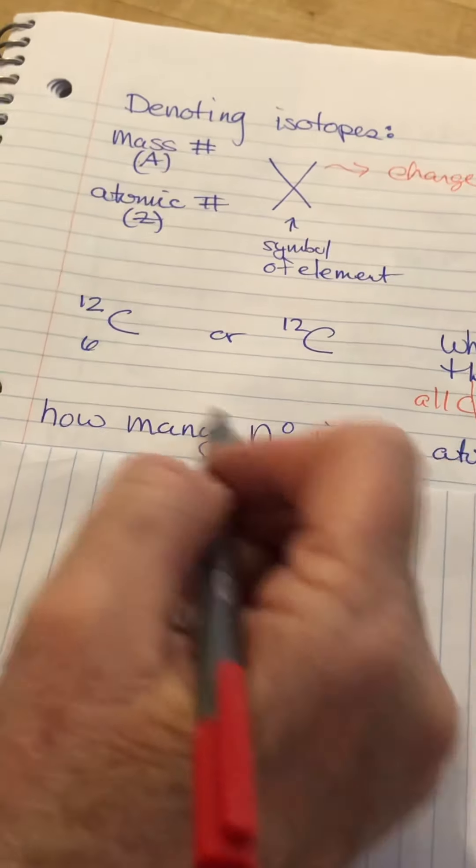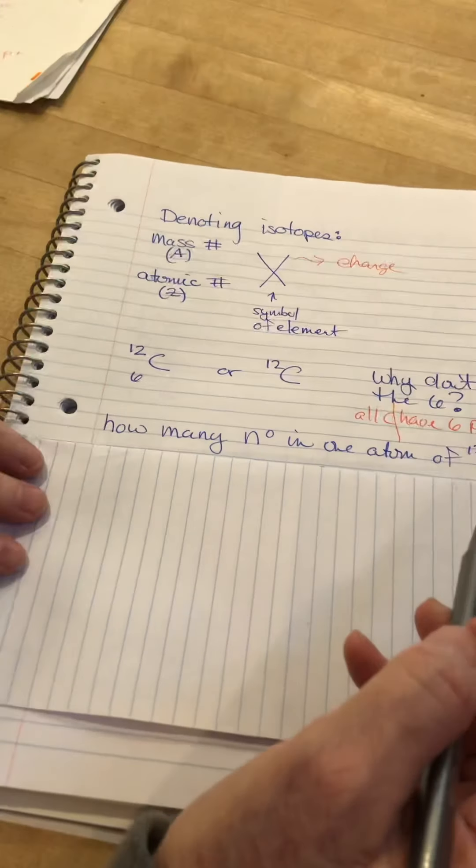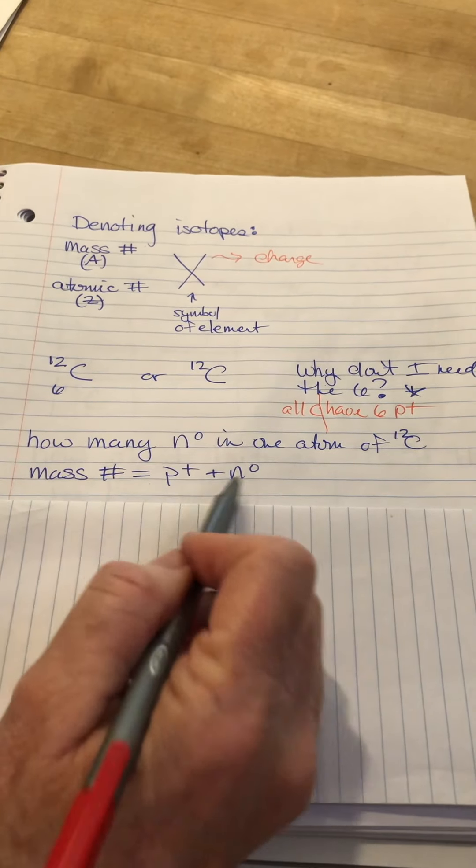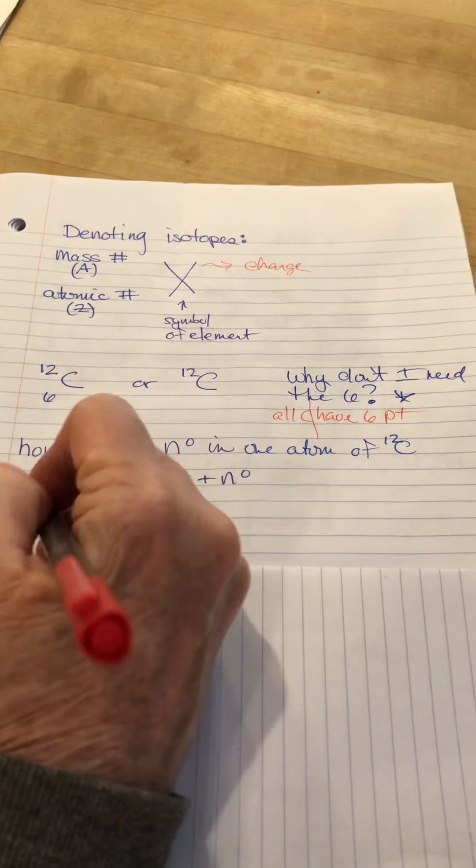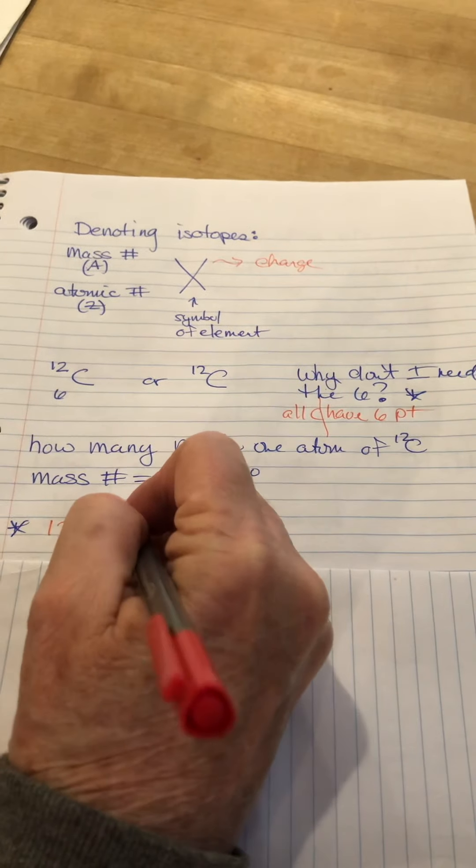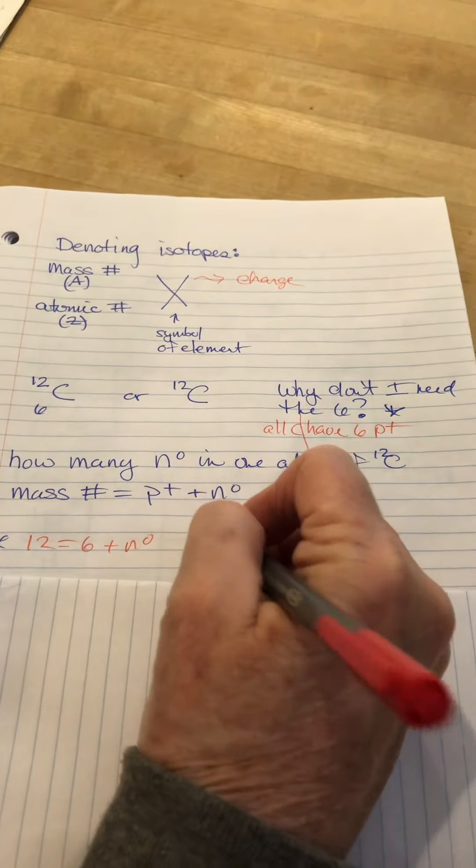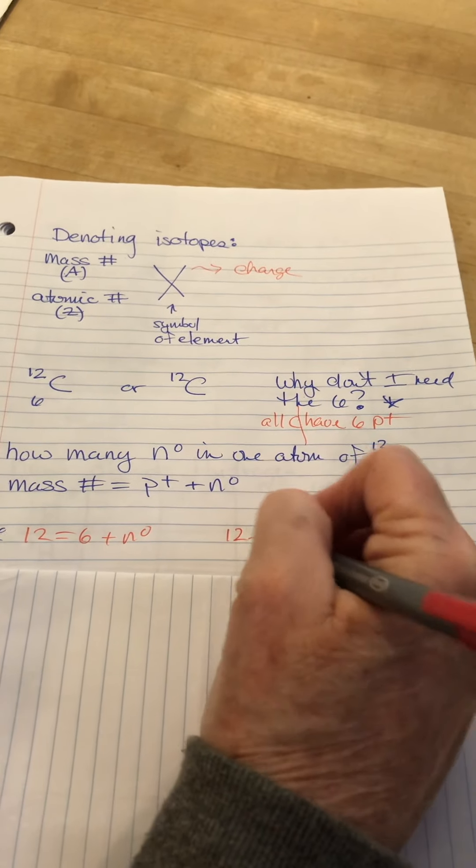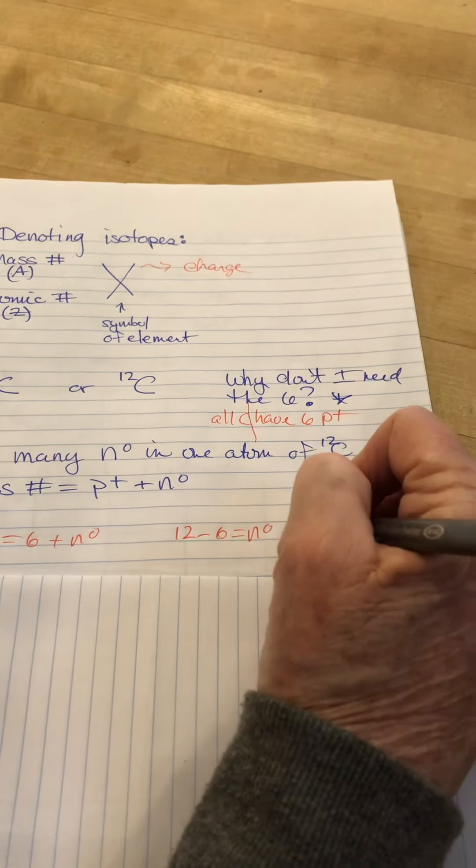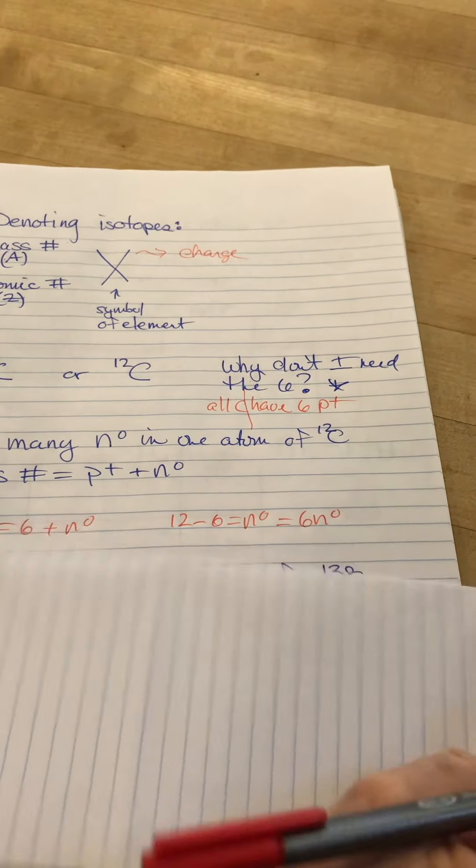So, if I have carbon-12, how many neutrons are in one atom? Well, we know the mass number equals the sum of the protons plus neutrons. So, I know the mass number is 12 equals the protons, which is 6, plus the neutrons. So, 12 minus 6 equals the number of neutrons, which in fact equals 6 for this particular element of carbon.